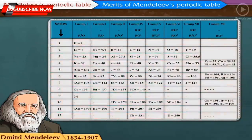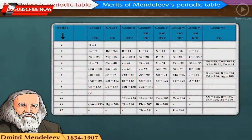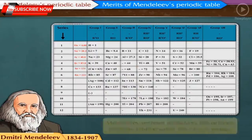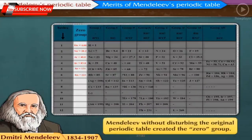Mendeleev did not keep any place reserved for noble gases in his periodic table. But when the noble gases Helium, Neon and Argon were discovered by the end of the 19th century, Mendeleev, without disturbing the original periodic table, created the zero group in which the noble gases could be fitted very well.